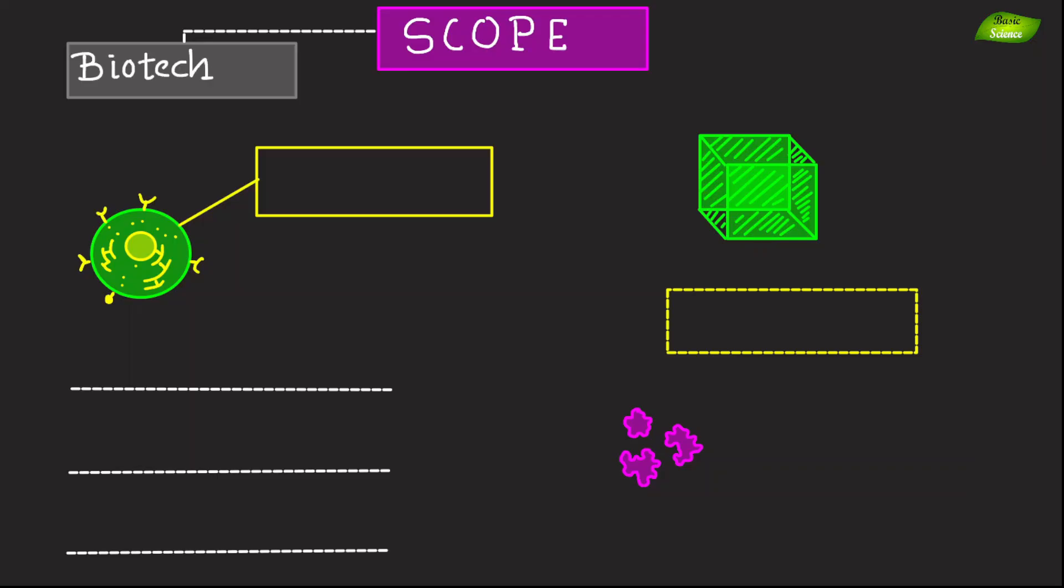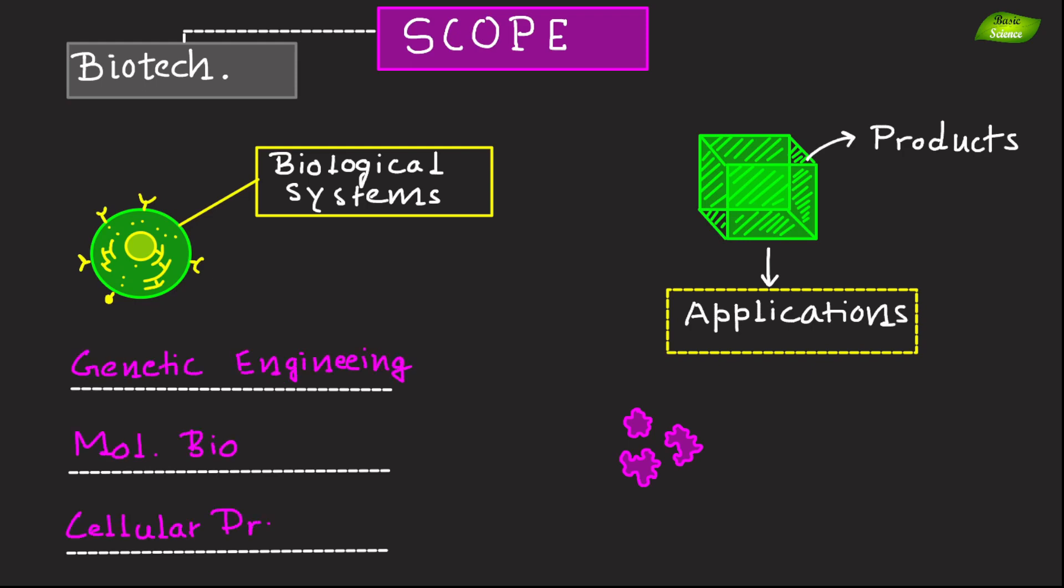Biotechnology focuses on using biological systems, organisms, or derivatives to develop products or processes for specific applications. It often involves genetic engineering, molecular biology, and cellular processes. Examples include production of insulin using genetically modified bacteria.